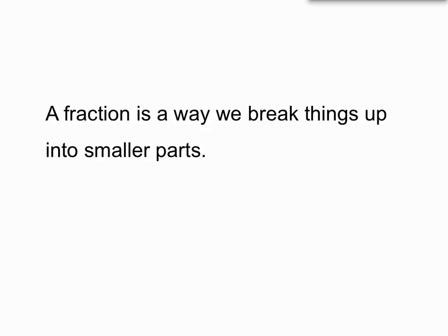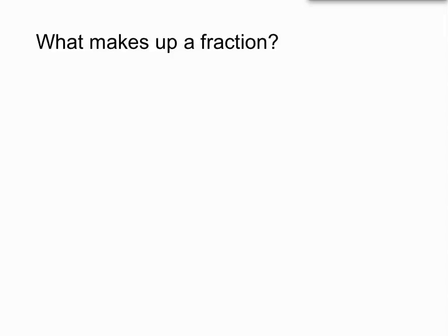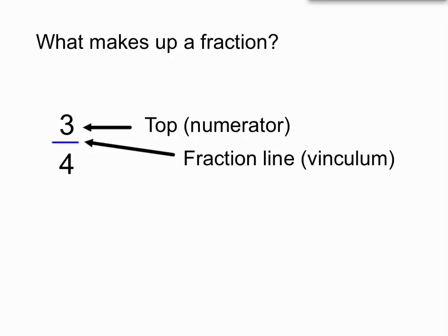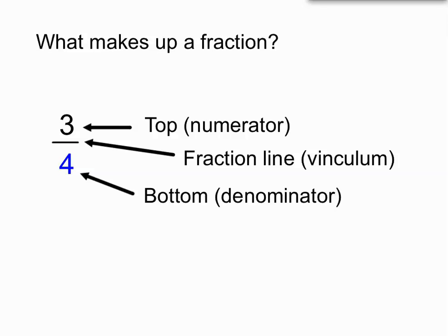A fraction is a common way we break things up into smaller parts. When we see a fraction like 3 over 4, the top of the fraction is called the numerator. That line in between the two numbers is often called a fraction line, but the proper name is a vinculum. And the bottom is known as the denominator. We might stick to top and bottom, although we'll keep in mind that they have proper names as well.